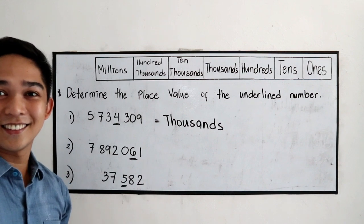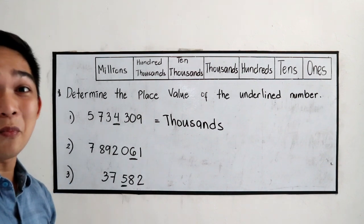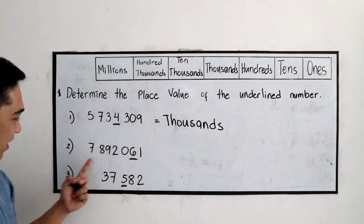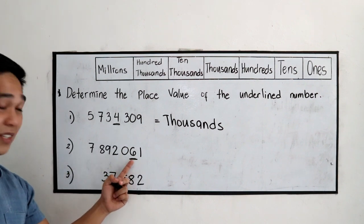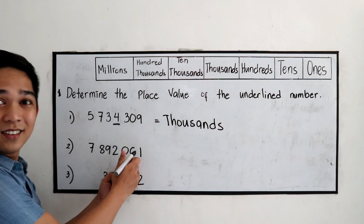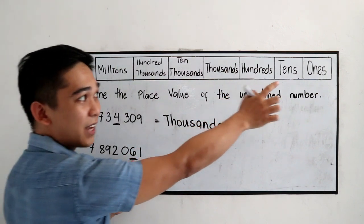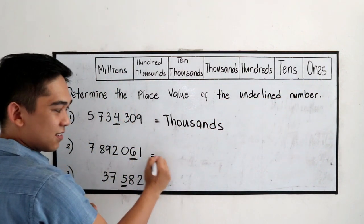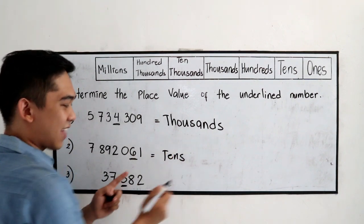Did you get it? Now, let's try number 2. The underlined number is 6, second from the right. So, second from the right is the tens. So, we need to write tens.